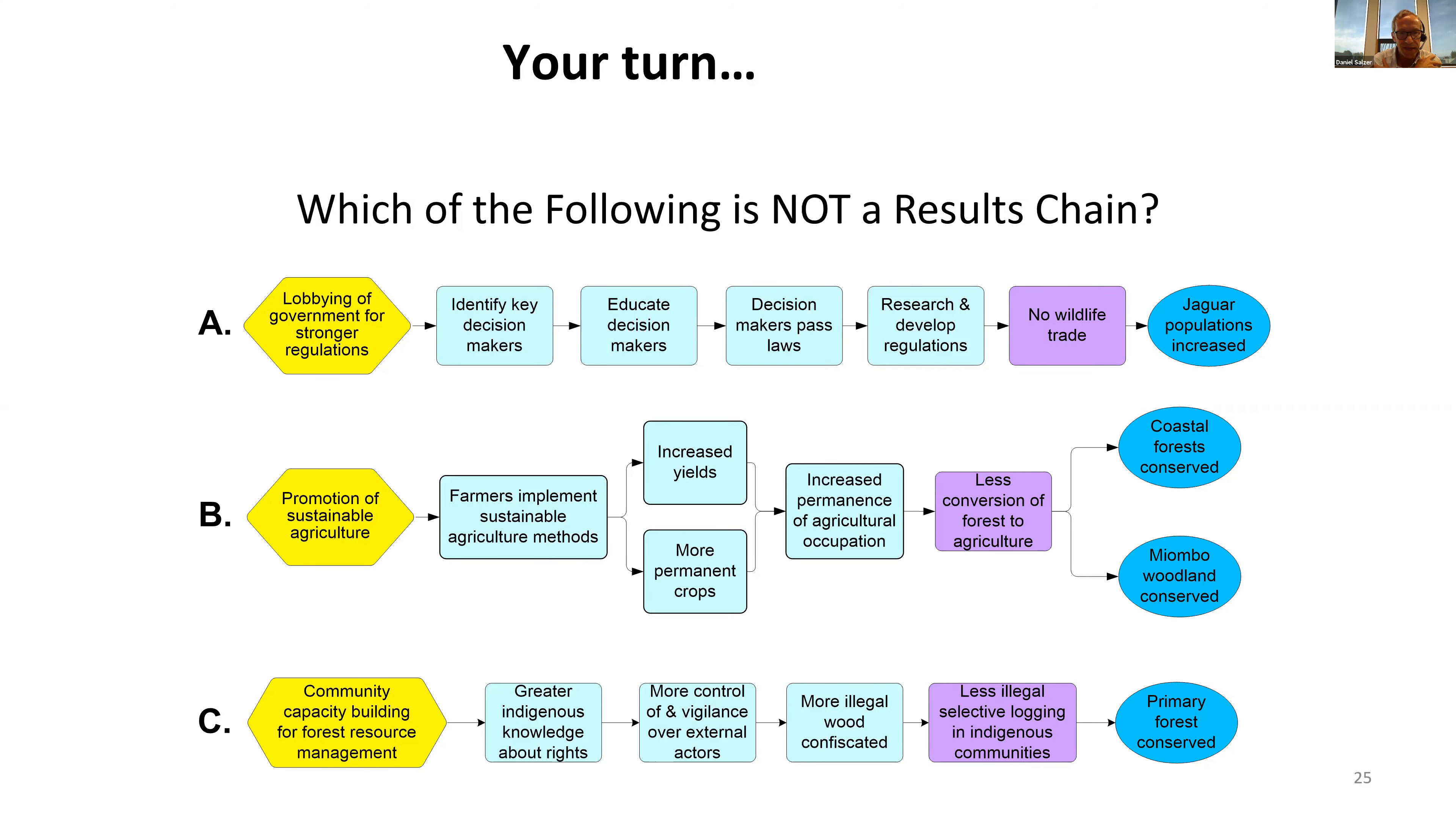Here's another poll. If you looked at these three examples, which does not look like a results chain? It's more of an activity chain. A couple of them have good result statements. This one I think is pretty obvious—the first one. You want to avoid that when working through results chain methodology.